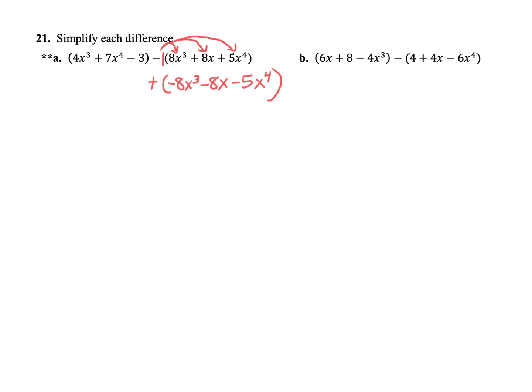So we can do it just like the previous question. Let's make sure though that we are writing the terms in standard form. When I look at my first expression, the largest exponent is x to the fourth, so I'm going to put that first: 7x to the fourth. Then the next biggest exponent is 4x to the third. And then the minus 3 goes on the end. One thing I'm noticing right now is that I have an 8x, so I actually want to leave a gap for the x. I'm going to insert 0x as a placeholder, and then put the minus 3 on the end — just so when I line up the second polynomial, I have a spot to put the x term.